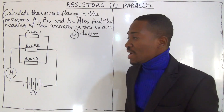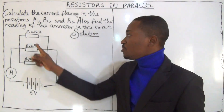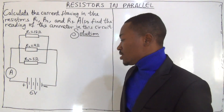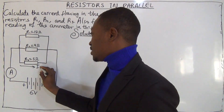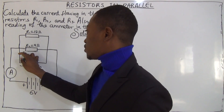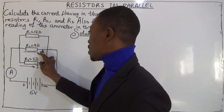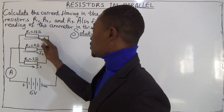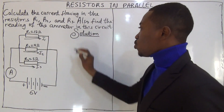Now we can use Ohm's Law to find the current flowing through each resistor — through R3, R2, and R1. Let the current flowing through R3 be I3, the current through R2 be I2, and the current through R1 be I1.